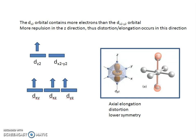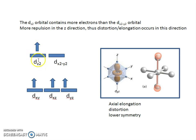To summarize: the dz² orbital contains more electrons than the dx²-y² orbital, so there is more repulsion in the z direction. This higher repulsion in the z direction causes distortion, the metal–donor atom bond length becomes elongated, and this is axial elongation.